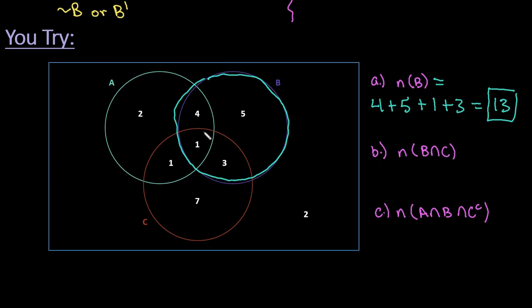For the next one, we're looking for B and C. So we're looking where B and C overlap. So we're looking at this region right here. There's no other restrictions, so we would just do 1 plus 3, and that gives us a total of 4 elements that fall in both B and C.